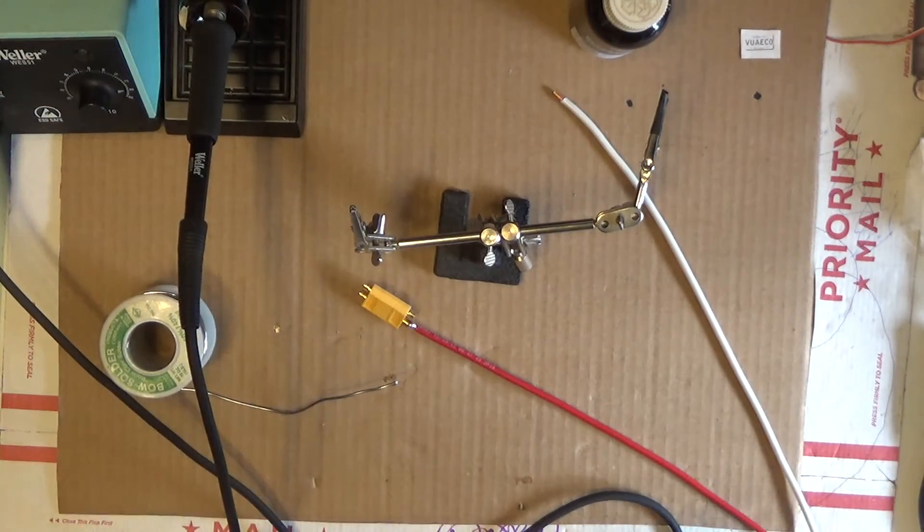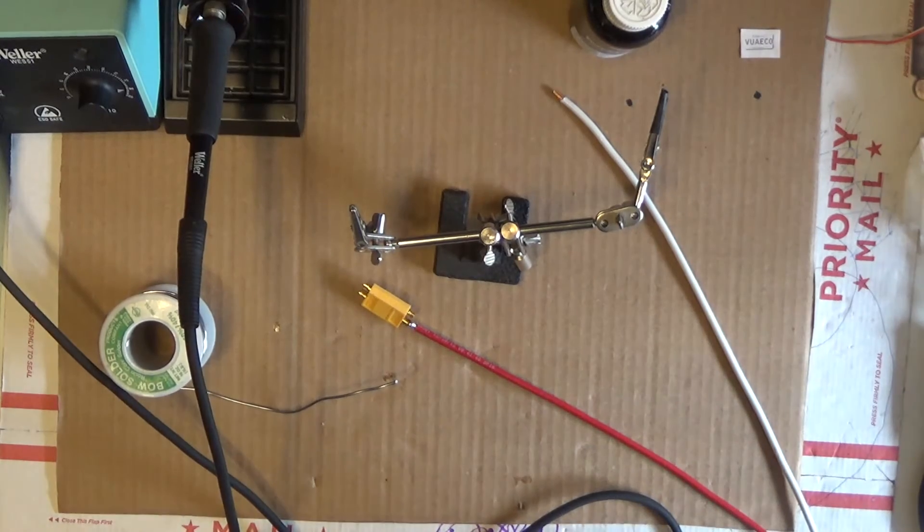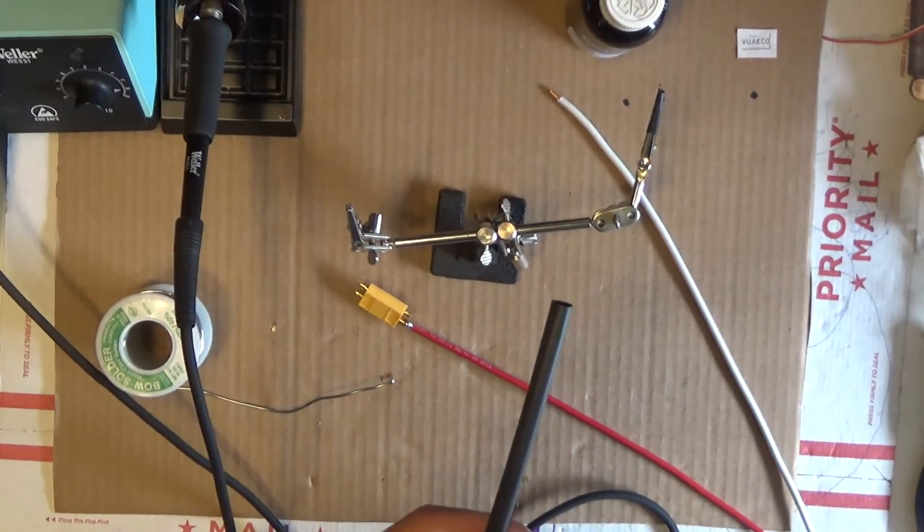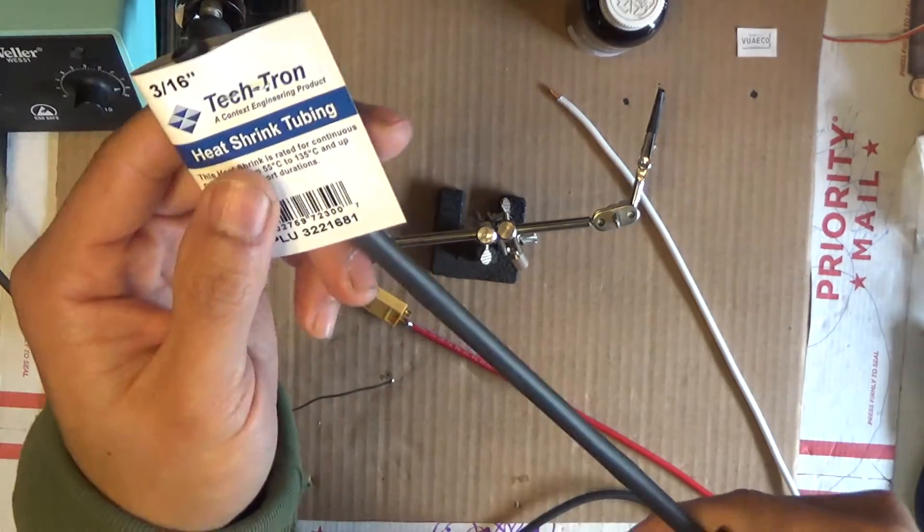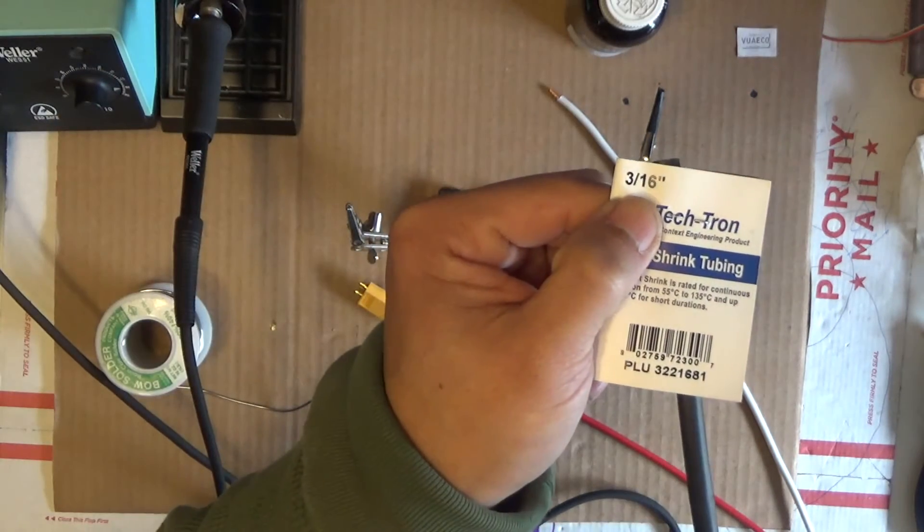So next is the heat shrink tube. The heat shrink tube I'm going to use is size 3/16 inch.